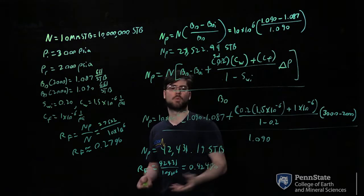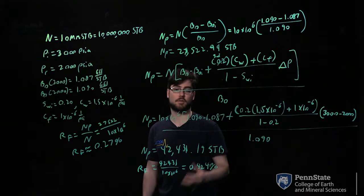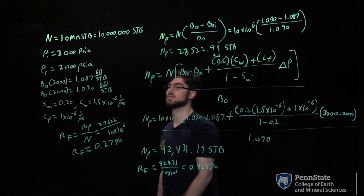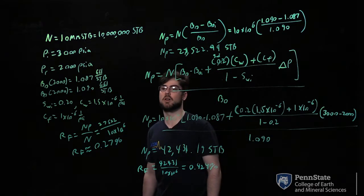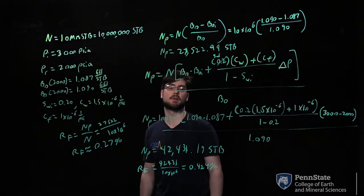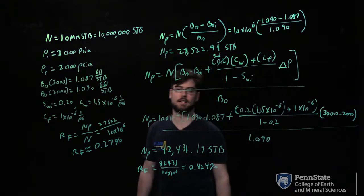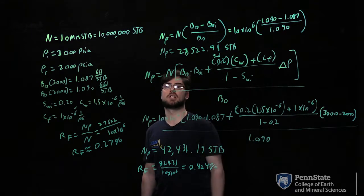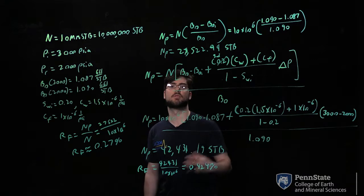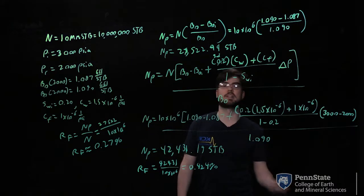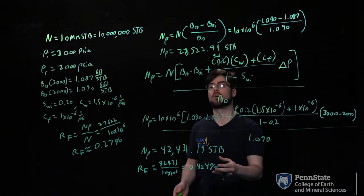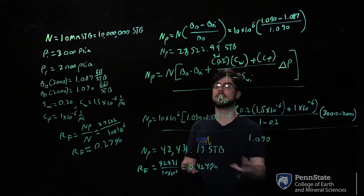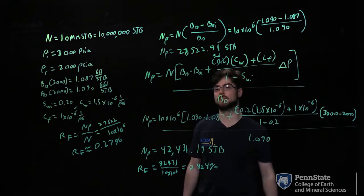These recovery factors seem very small, which they typically are for this drive mechanism. But 0.424% versus 0.27% represents a difference of over 10,000 barrels of oil — about 25% difference on its own. It's important to understand this as a way to visualize one of the drive mechanisms of oil production. This is a material balance approach and doesn't account for pressure drop at the wellbore as discussed with Darcy's law, pseudo-steady and steady state — this is purely about a drive mechanism.